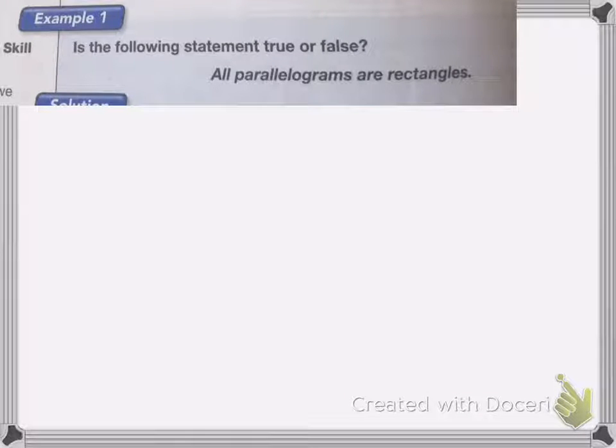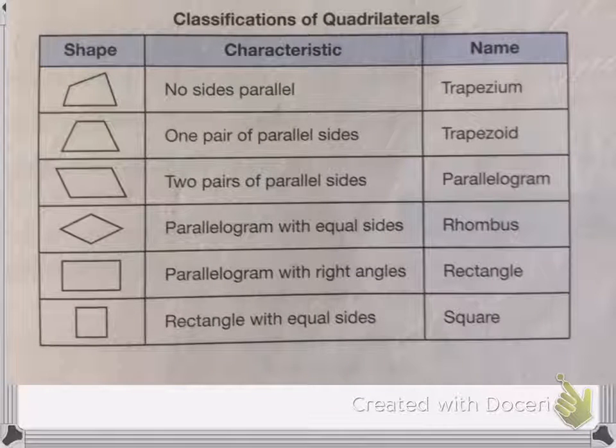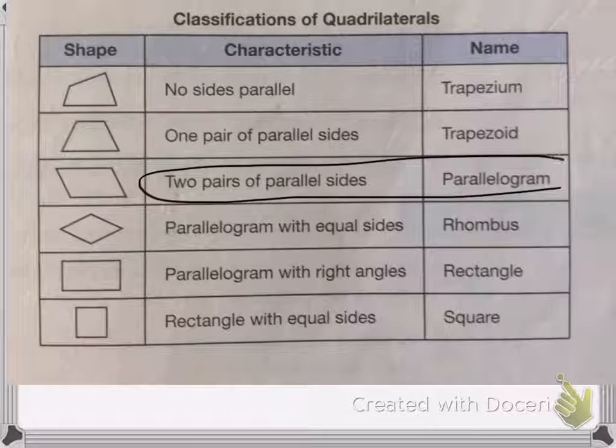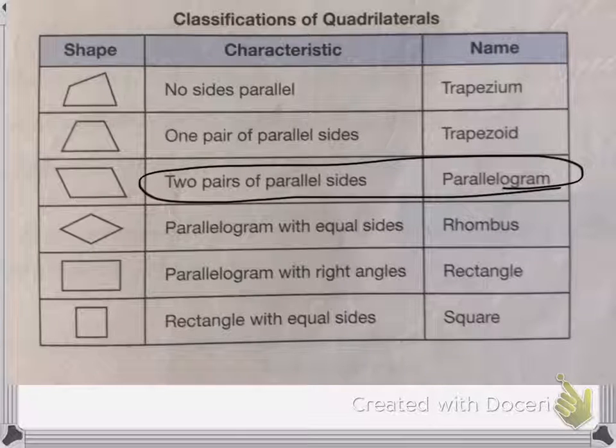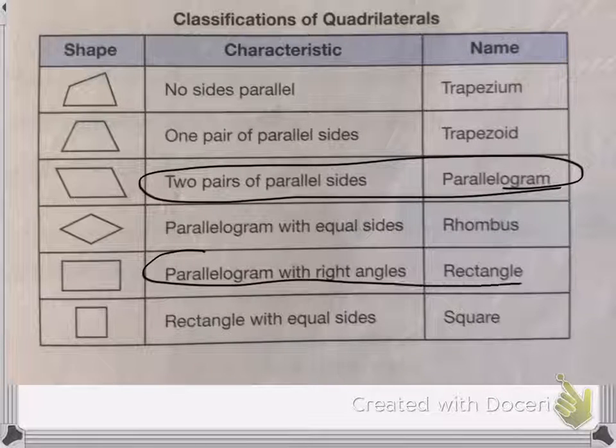So my question here is, is the following statement true or false? All parallelograms are rectangles. So if we look at our definition, a parallelogram has two pairs of parallel sides, while a rectangle is a parallelogram with right angles.